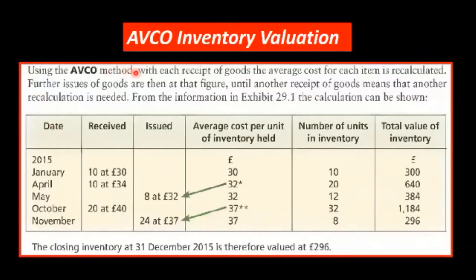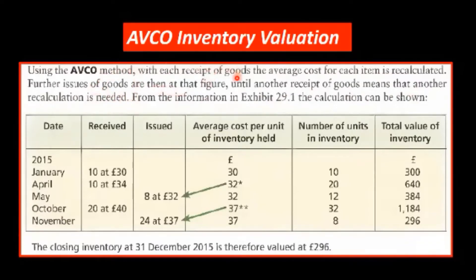Using the AVCO method, with each receipt of goods — as when you buy goods — the average cost of each item is recalculated. Further issues of goods are then based on that figure until another receipt of goods means that another recalculation is due. So basically, any time you buy goods, the average cost would change.